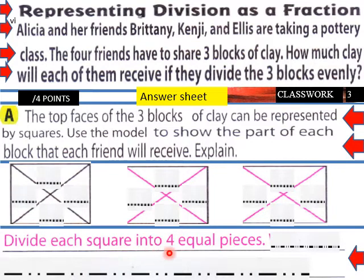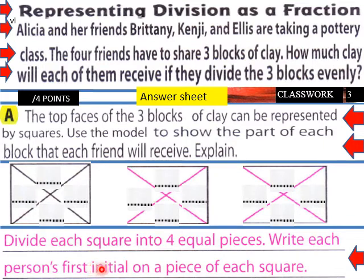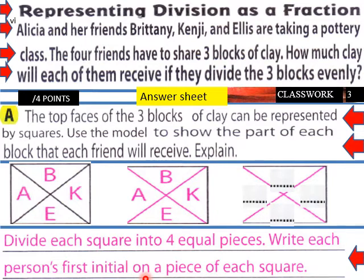Divide each square into four equal pieces. So you have three blocks that need to be split four ways. Write each person's first initial on a piece of each square. So B would be for Brittany, A would be for Alicia, K for Kenji, and E for Ellis. B-A-K-E, B-A-K-E, B-A-K-E.